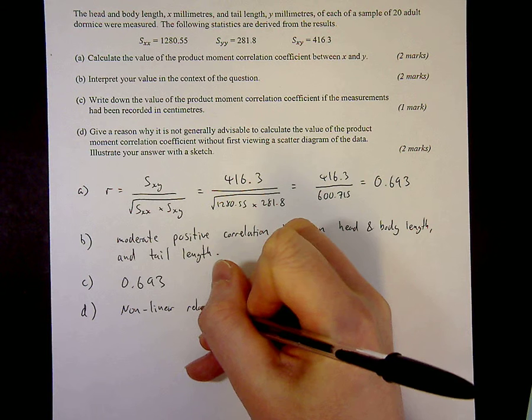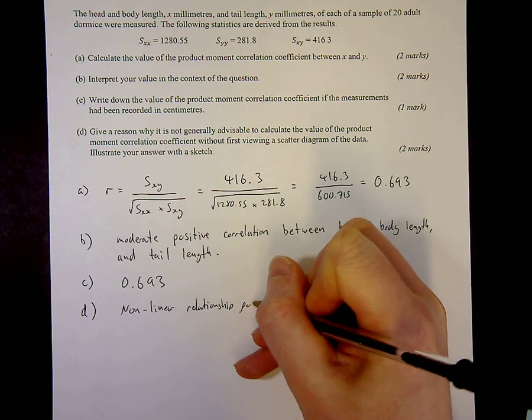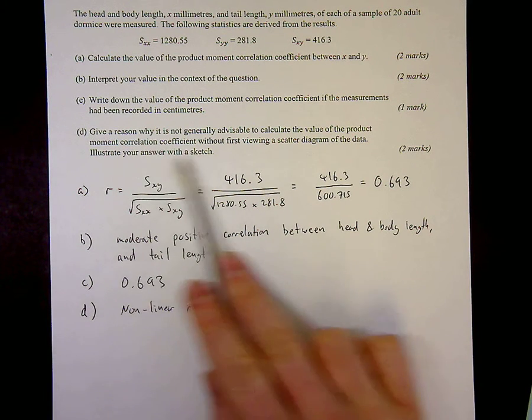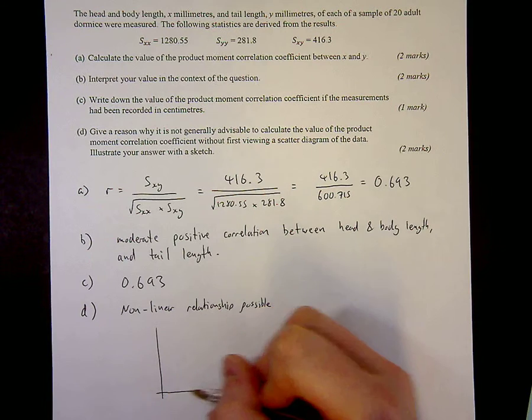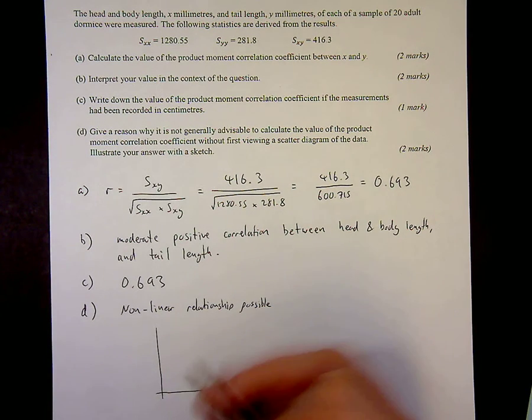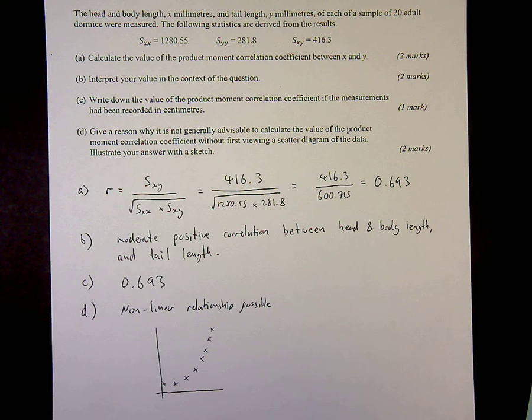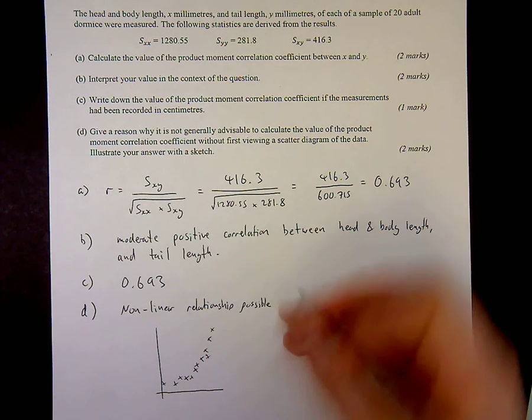You might say non-linear relationship is possible. It says illustrate your answer with a sketch. So I'll get my second mark for giving an example of that. So I might draw, for example, you might have two variables here, but you might have a quadratic such as that. It doesn't give you the idea. Any examples showing information why not a linear relationship.